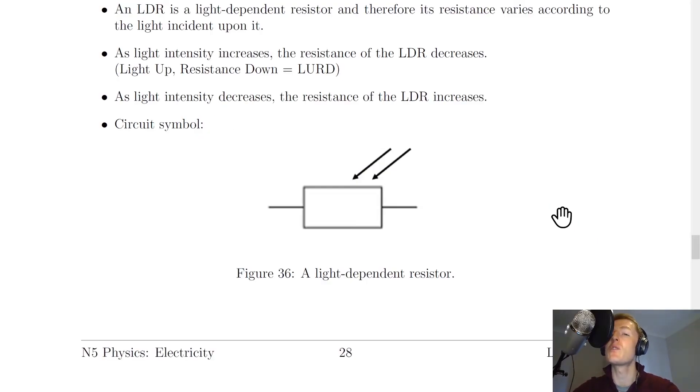So just to summarize, it's useful to remember those two rules, one for thermistors and one for LDRs, where we have TURD and LURD. So temperature up, resistance down for thermistors, and light up, resistance down for LDRs.